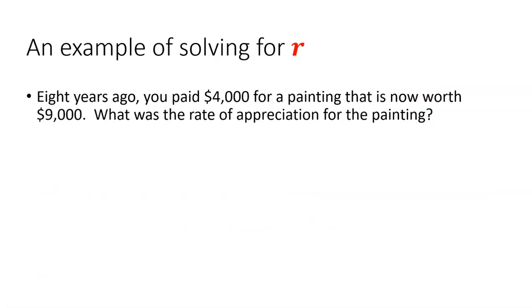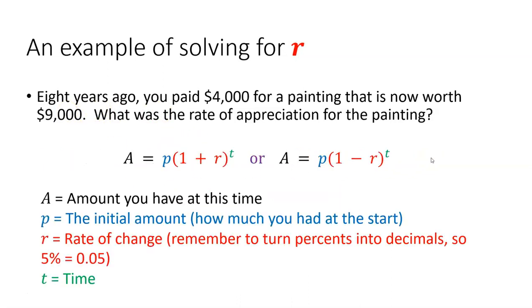With this example, eight years ago you paid $4,000 for a painting that is now worth $9,000. What was the rate of appreciation for the painting? Well, one of the first questions we have to ask ourselves is, is this exponential growth or exponential decay? Well, we've got some key words here. Appreciation means things are going up in value. That's growth. And the value of the painting was $4,000 eight years ago. Now it's $9,000. It's gone up. So this is exponential growth. That means we're going to look at our two formulas and choose the one with the plus sign.